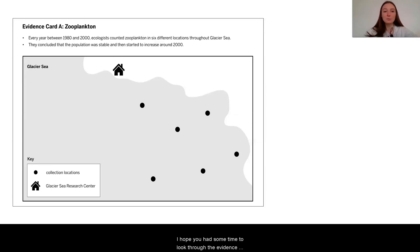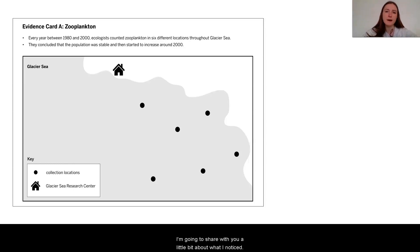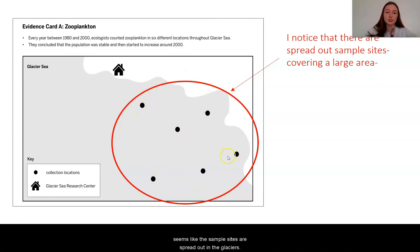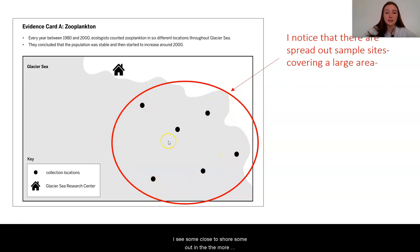I hope you had some time to look through the evidence and make your own thoughts and annotations. I'm going to share with you a little bit about what I noticed. In evidence card A, the first thing that I noticed was it seems like the sample sites are spread out in the glacier sea. I see some close to shore, some out in the middle of the sea, and there are six different locations.